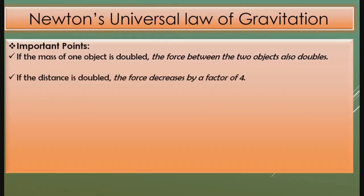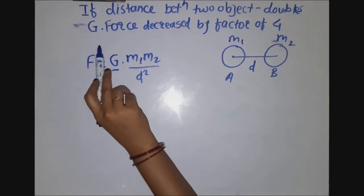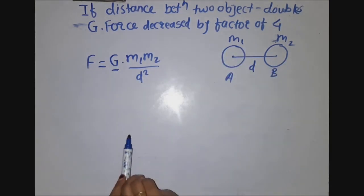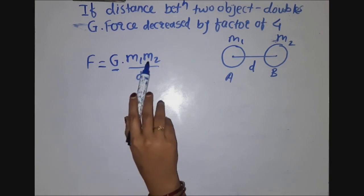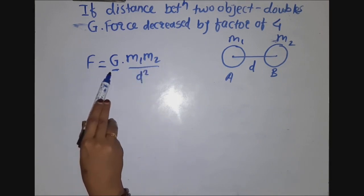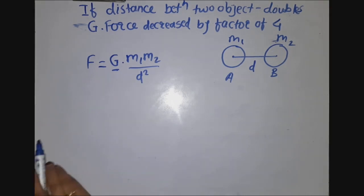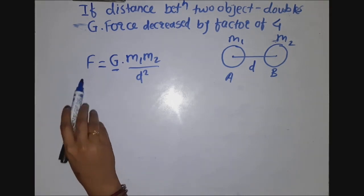The second important point is: if the distance between two objects doubles, the gravitational force decreases by a factor of 4. To explain this, we know that from Newton's universal law of gravitation, F is equal to G into M1 into M2 divided by D squared. The force is inversely proportional to the square of the distance.